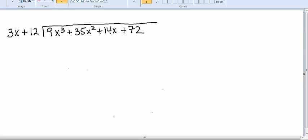Let's look at dividing 9x cubed plus 35x squared plus 14x plus 72 by 3x plus 12. When we perform long division of polynomials, we're always going to focus on the first term on the left. In this case, 3x, and also the first term under the division symbol, 9x cubed.